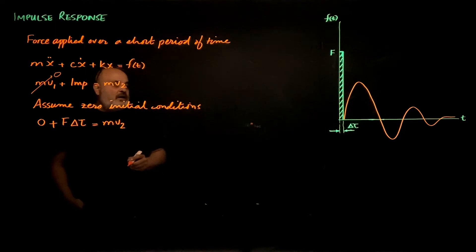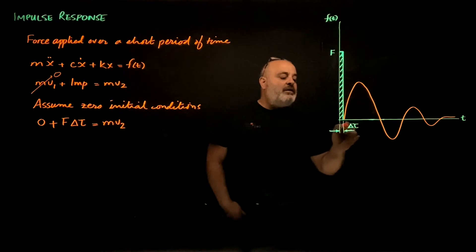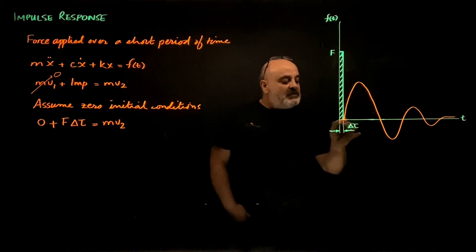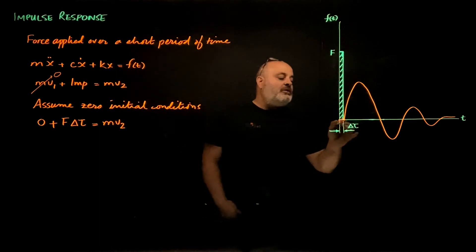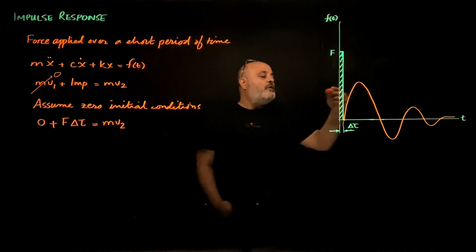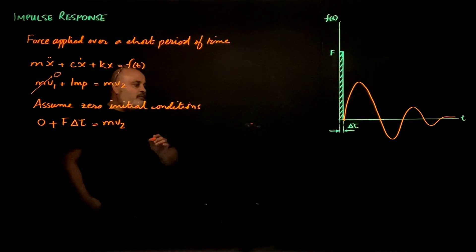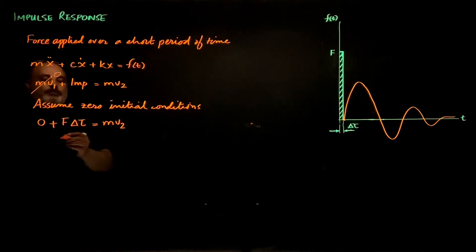Now assuming that delta tau is so small that this point, the response start point, is almost zero, I will consider this point as the initial condition point for the start of motion due to the impulse. And I assume that as zero.